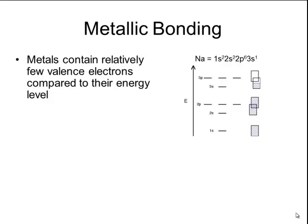Metallic bonding is a little bit more complicated than either ionic bonding or covalent bonding. In general, metals contain relatively few valence electrons compared to their energy levels.